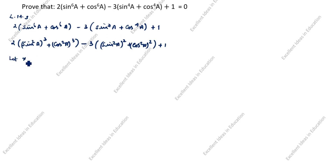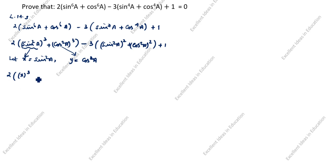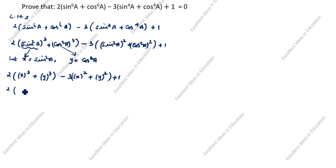Next, let x = sin²a and y = cos²a. So sin²a we will take as x and cos²a we will take as y. The expression becomes 2(x³ + y³) − 3(x² + y²) + 1.